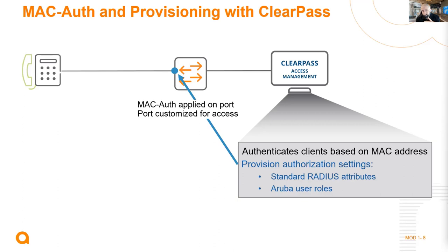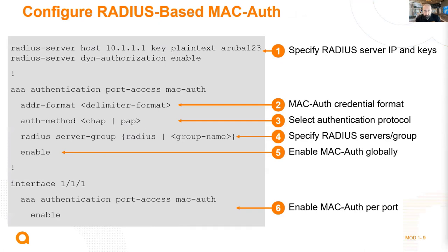In ClearPass, once the conditions are met and the user authenticates, actions are taken such as assigning an Aruba user role, VLAN assignment, or quality of service. The user role contains settings for the connected device. On the switch side, you specify who the ClearPass server is - this is common between dot1x authentication and MAC authentication.